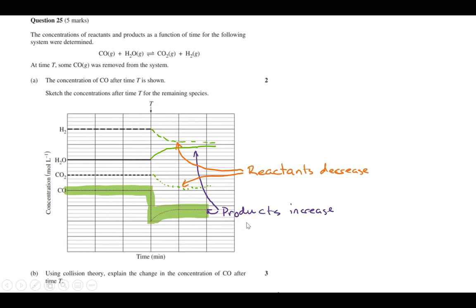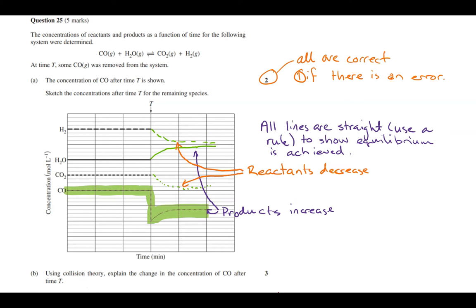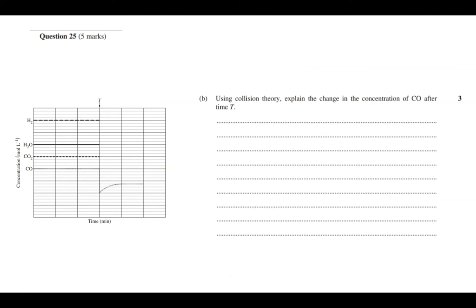Note that the labels should say 'reactants' and 'products' — I mixed those around while writing. Also make sure all lines on your sketch are straight — use a ruler. The equilibrium must be shown as being re-achieved. You get full marks if all lines are correct, one mark if there is a single error, and that can include not drawing straight lines.